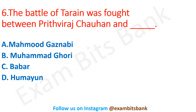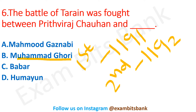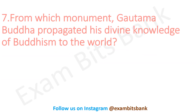Next question: The Battle of Tarain was fought between Prithviraj Chauhan and whom? Options are Mahmud Ghaznabi, Mahmud Ghori, Babur, or Humayun. The correct answer is Mahmud Ghori, as we discussed just before. The first Battle of Tarain was fought in 1191 and the second battle was fought in 1192.